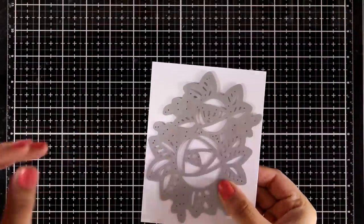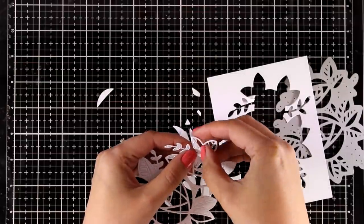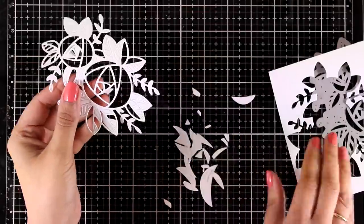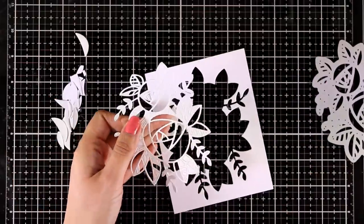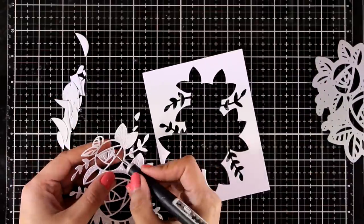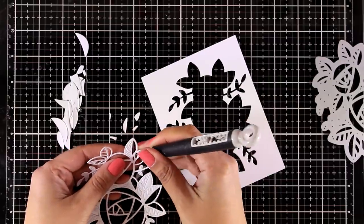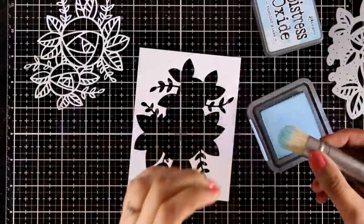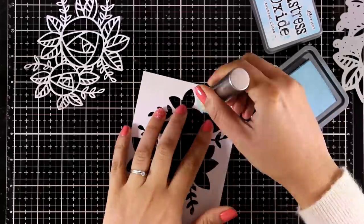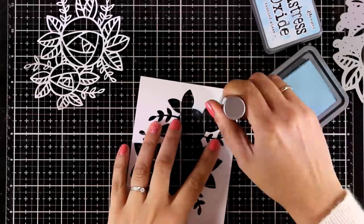For my first card I am using this big die that has just been released, it is called Beautiful Blooms and I love it because it is big and it really makes a statement on front of your card. Now I have run it through my die cutting machine and I am going to separate everything. So for my card I will be using both the negative and the positive cut out.